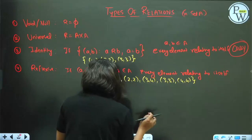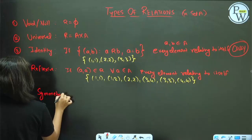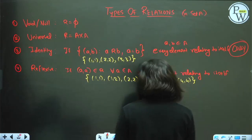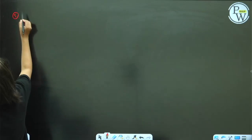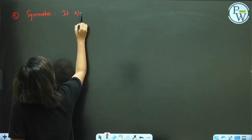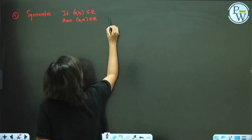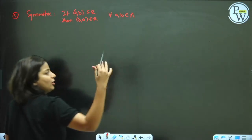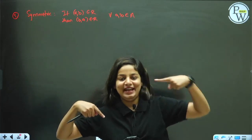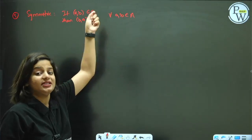The fifth type is symmetric relation. A symmetric relation is one where if (a, b) belongs to the relation set, then (b, a) should also belong to it, for all a, b belonging to the set. It's like a two-sided love story — if a connects to b, then b should also connect to a. That's a symmetric relation.